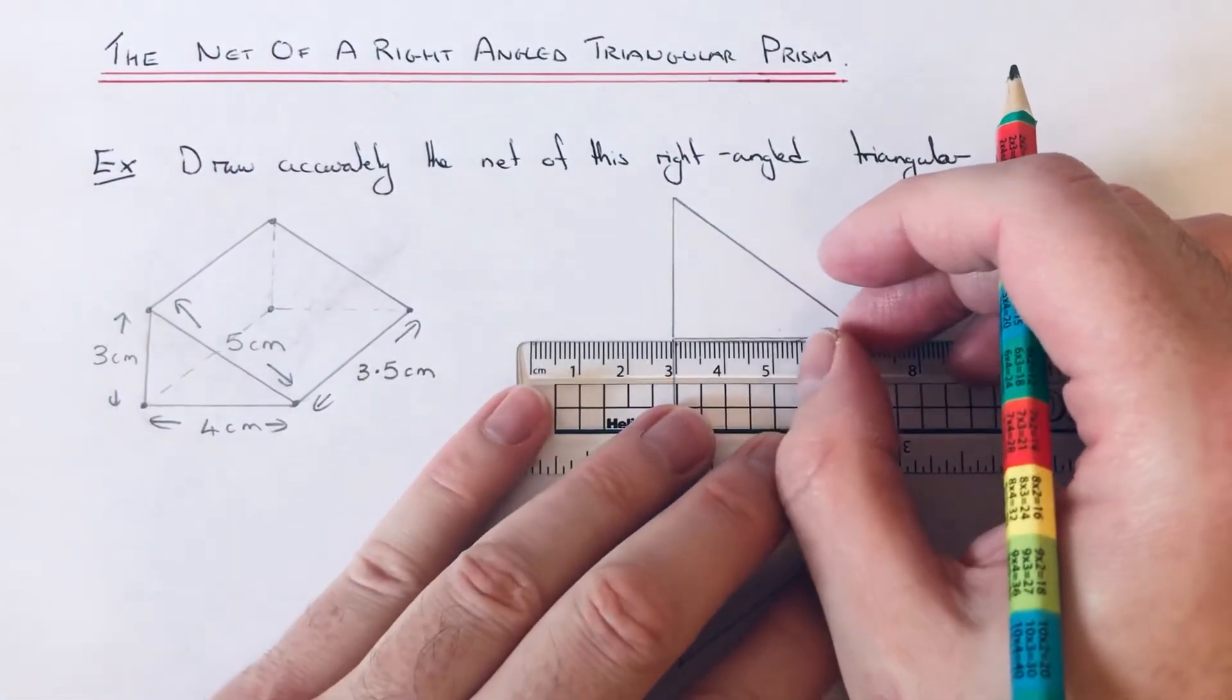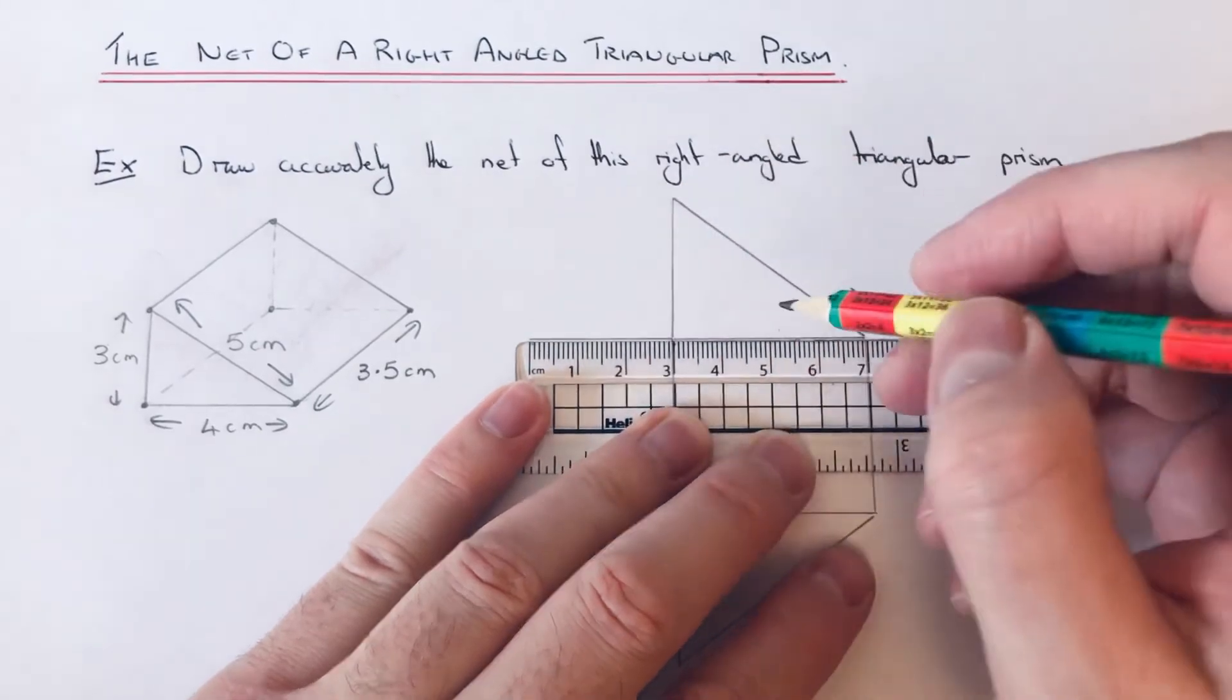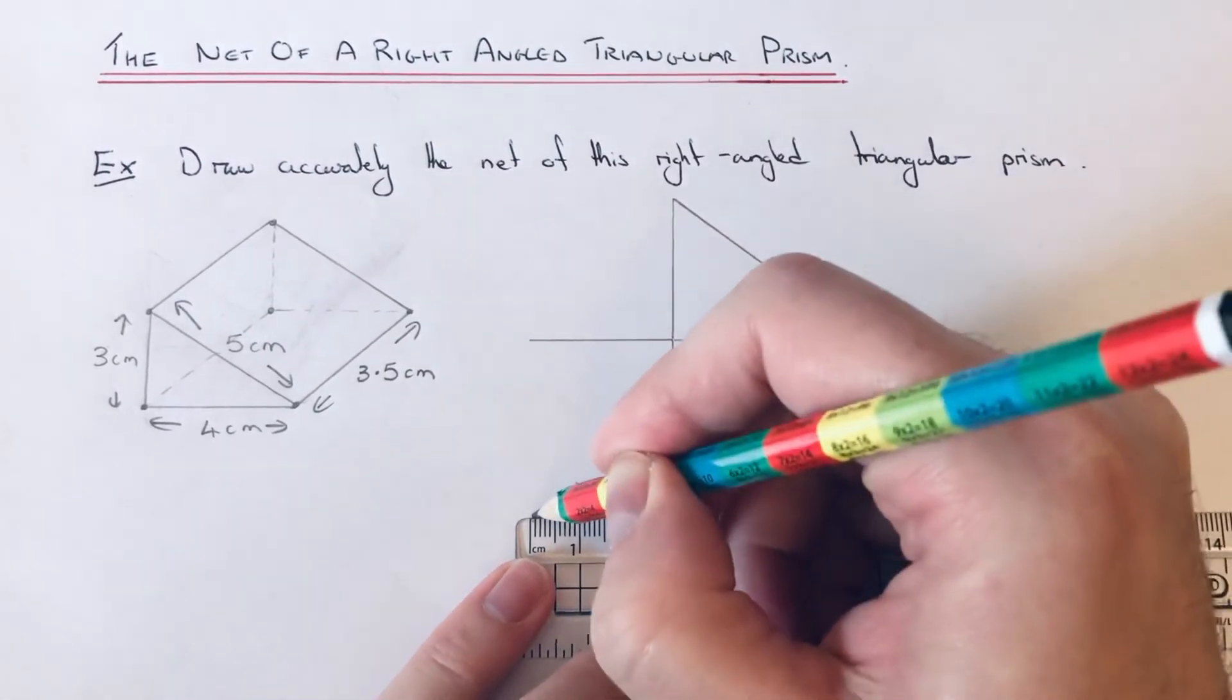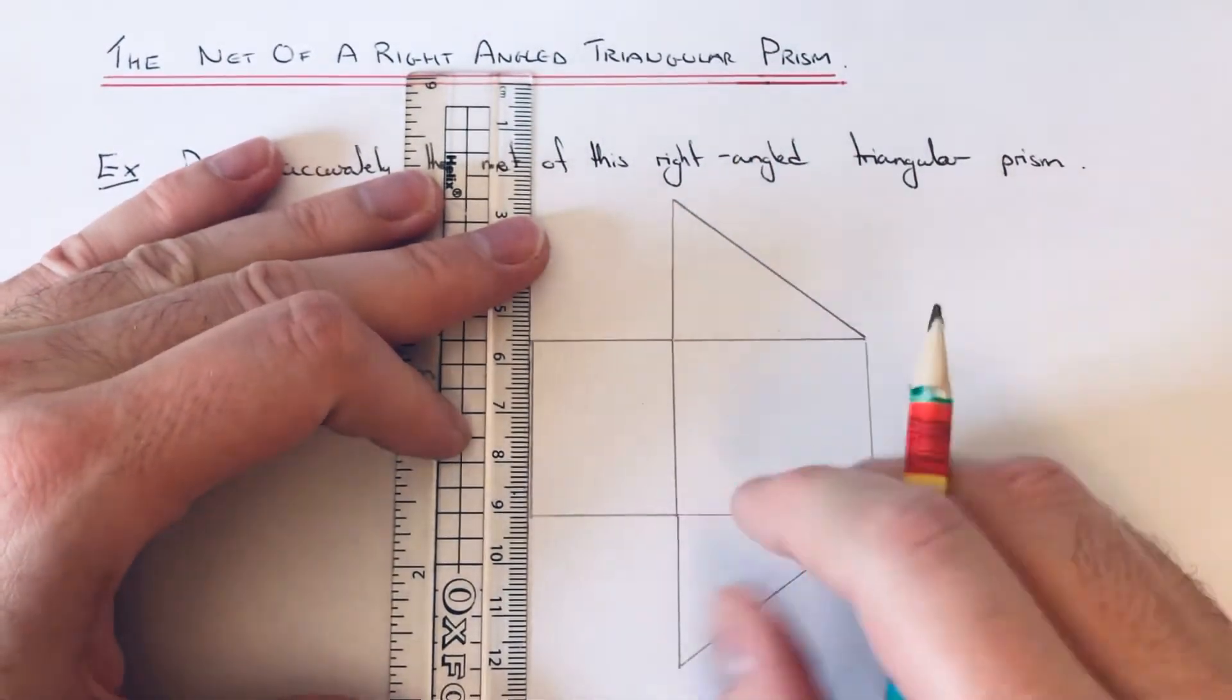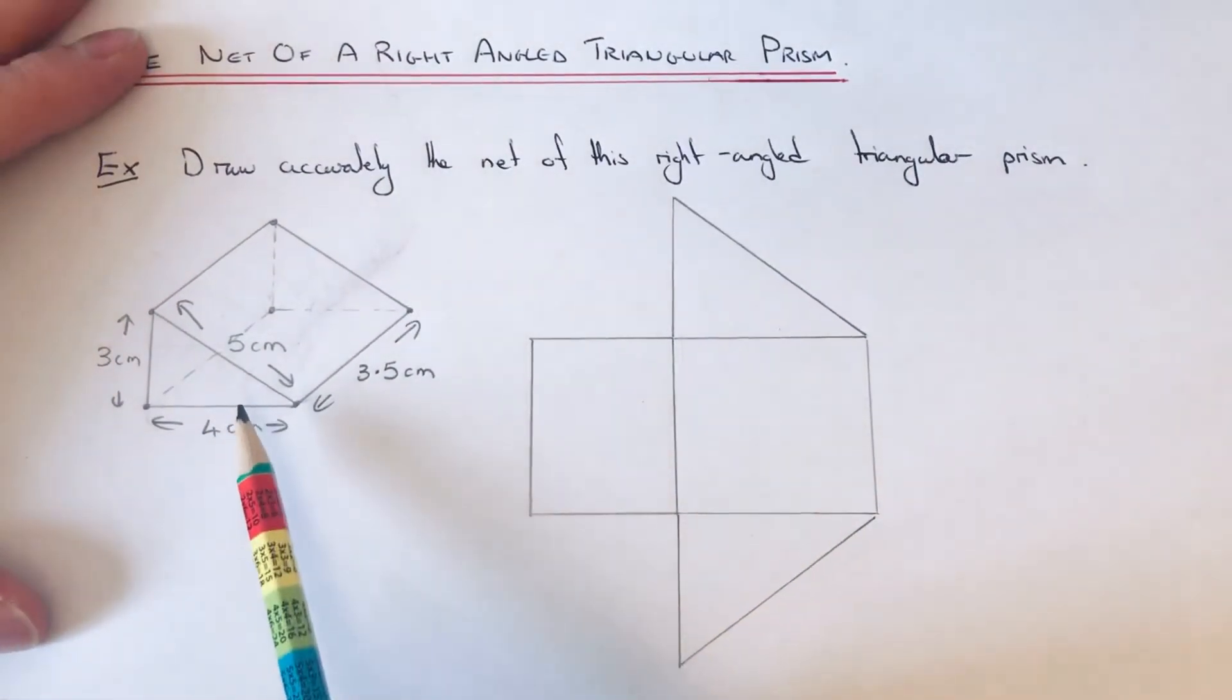out three centimeters and three centimeters down here. Okay, and then we've just got to do the sloping face.